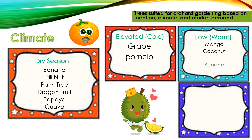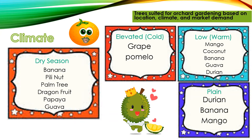For low or hotter areas, mango, coconut, banana, guava, and durian are suitable. On plains, durian, banana, and mango are recommended. As a reminder, don't rush into planting — think of the climate also.